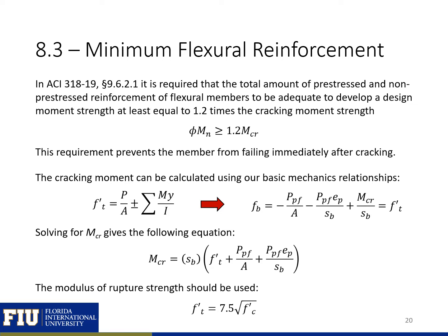The next code check related to flexural strength is the minimum flexural reinforcement requirement. This requirement states that the factored nominal moment must be greater than or equal to 1.2 times the cracking moment strength. With pre-stressed concrete members, the cracking moment is higher because of the pre-stressing, and we want to make sure we have enough strength so the member doesn't crack and immediately fail. For this check, we look at our bottom fiber stress equation including the pre-stressing eccentricity, set the bottom fiber stress equal to the tensile strength of the concrete, and solve for M_cracking.